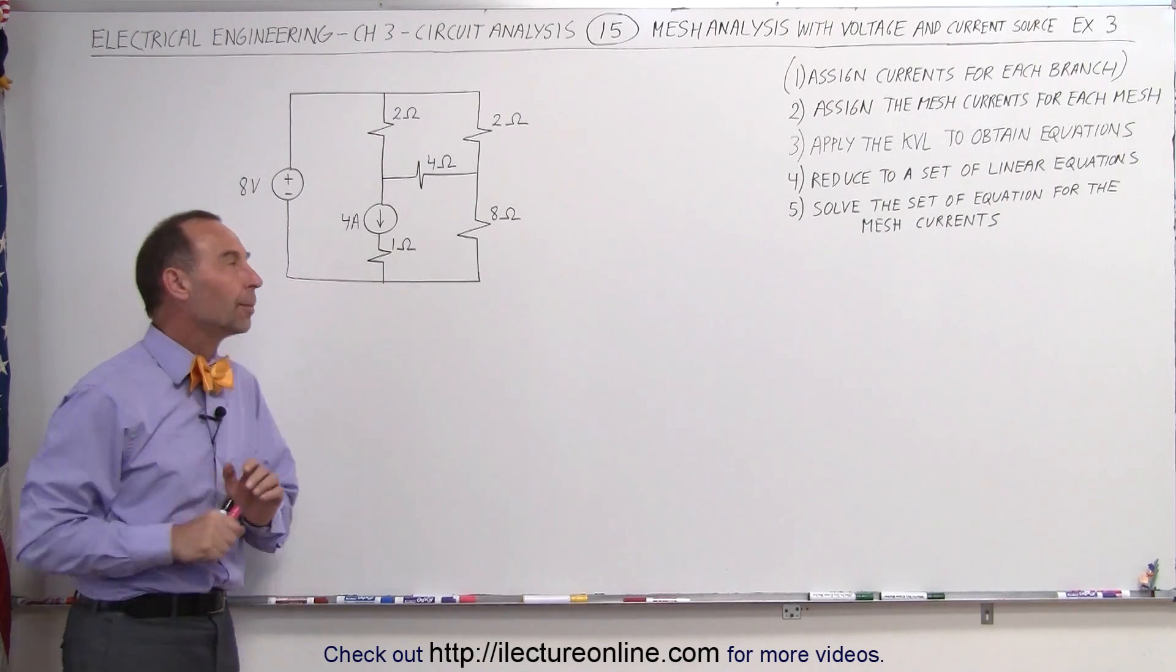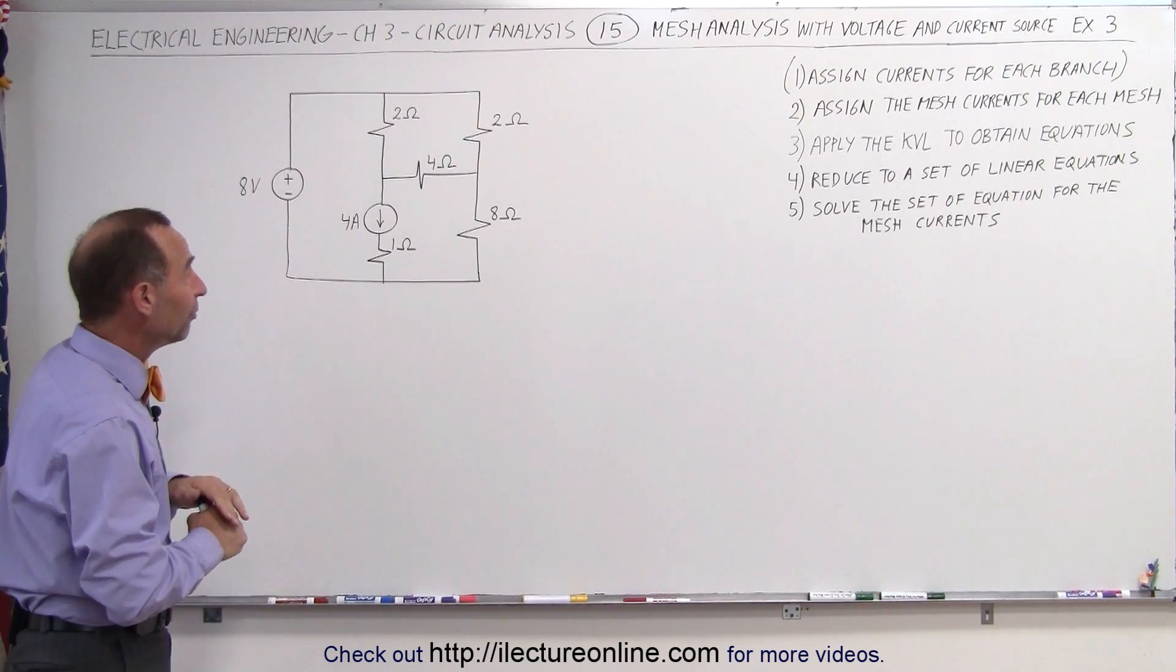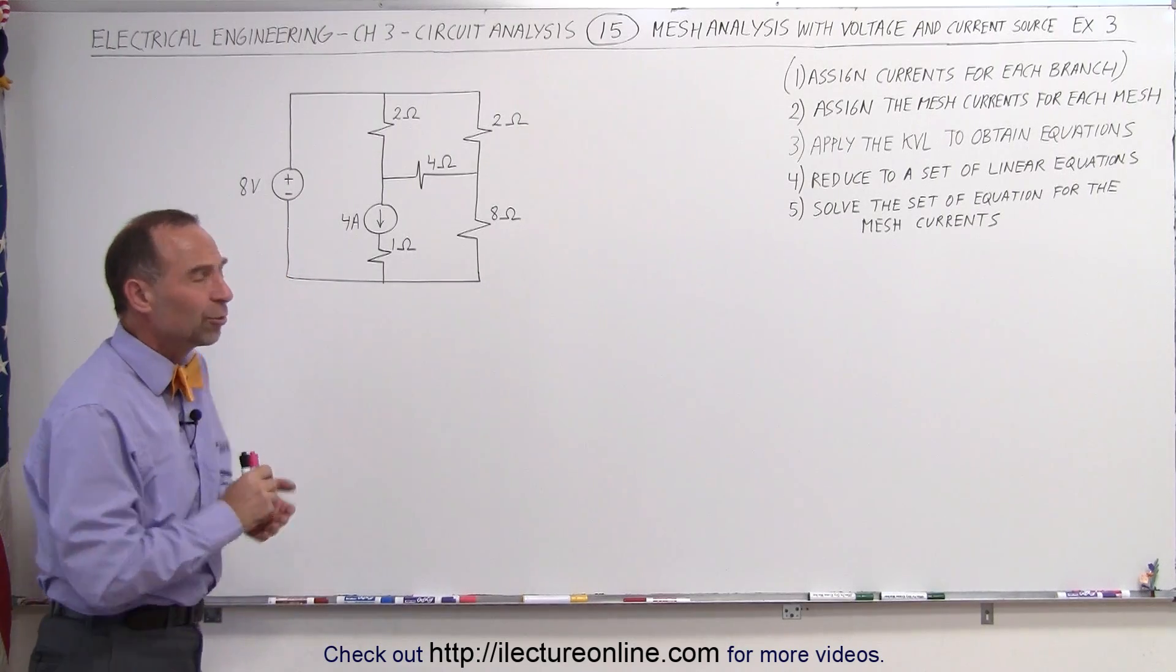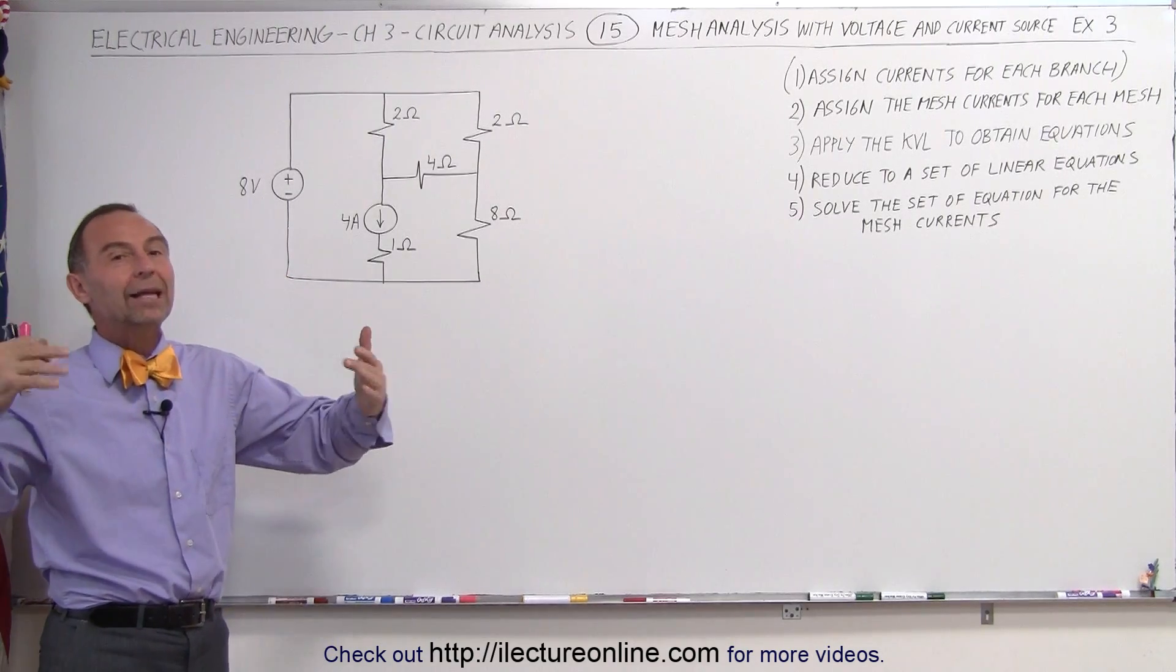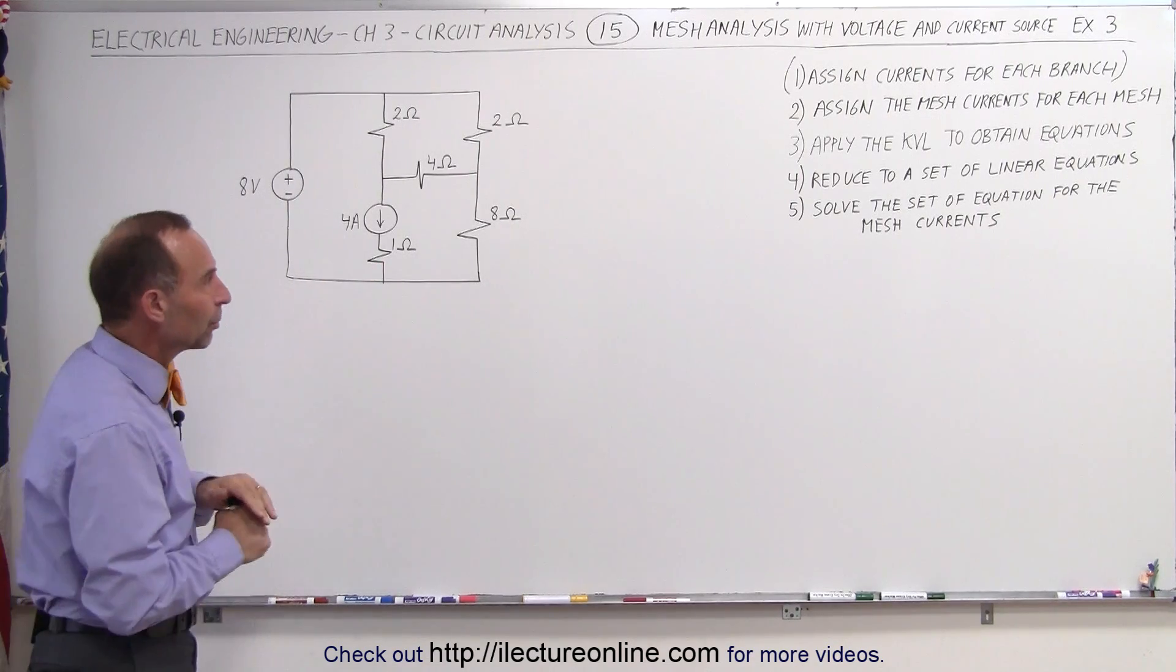So here's a slightly more complicated circuit that we're trying to solve. Again, we could start off by assigning currents to each of the branches, but as the circuits get more complicated, you may want to wait until the end to apply that particular step. So we'll jump straight to step number two.